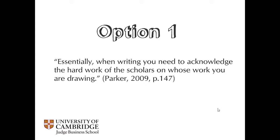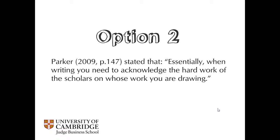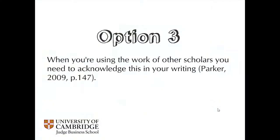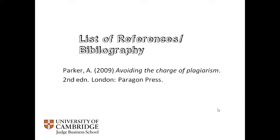Here's an example of how it can be done. For a direct quote, you include the text and then in parentheses the author's last name, the year, and the page number — for example, (Parker, 2009, p.147). Another way is to put the author's name at the front of the sentence: 'Parker stated that...' with the date and page number in parentheses right after. At the end of your paper, your list of references includes everything about the resource — the author, year, entire title, edition, place of publication, and the press.